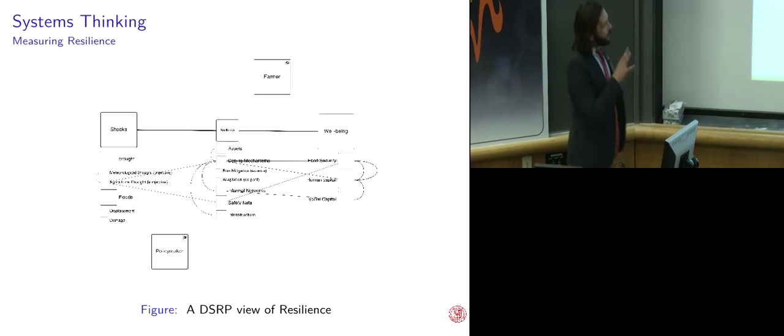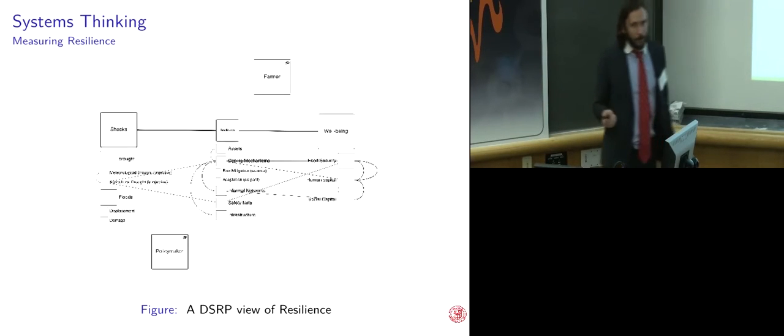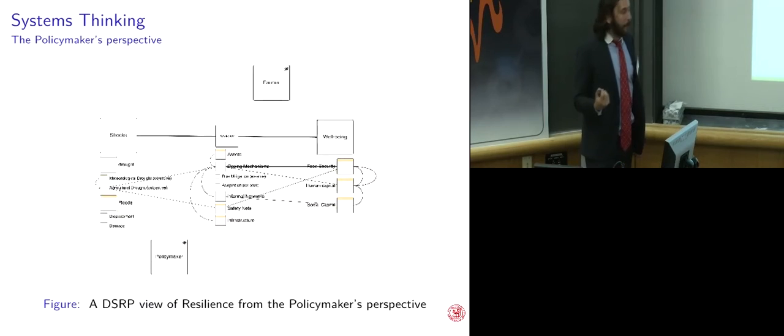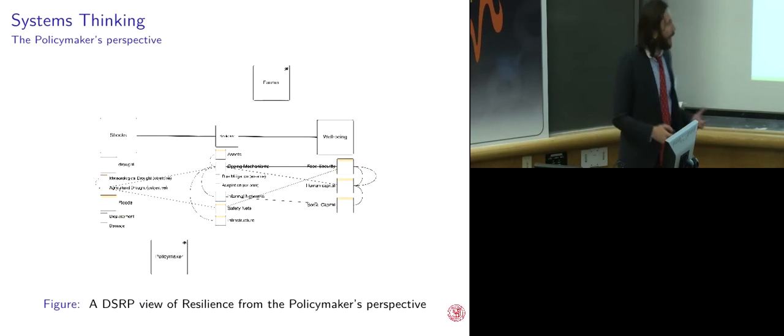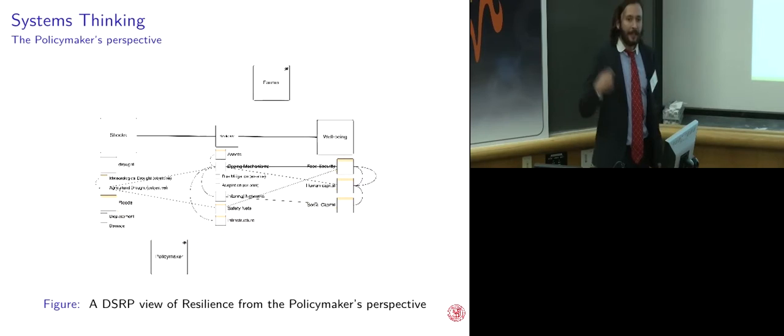However, in addition to this relationship that mediates shocks and well-being, we also have two different observers with their own perspectives. We have the policy maker who looks at what can be observed and what can be quantified. These are things like meteorological droughts, the map you saw earlier, human capital in terms of years of education, assets in terms of number of cows, things that we as enumerators and surveyors can go out there and count and quantify and put into our spreadsheets. So that's what we care about.